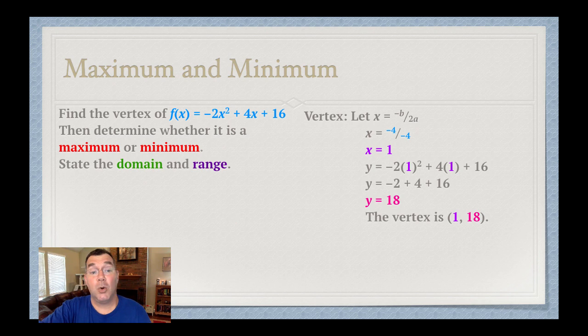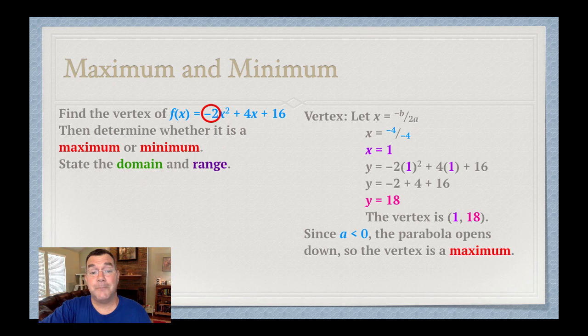Is that a maximum? Or is it a minimum? That all depends on my a value. If my a value, the very first number, is negative, if it's less than zero, that means the parabola opens down. So the vertex is actually at the top of the parabola instead of the bottom. That means that the vertex is a maximum.